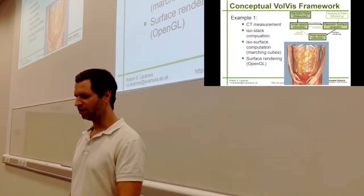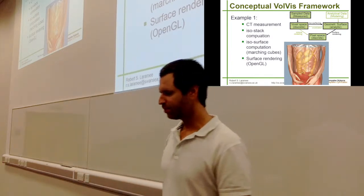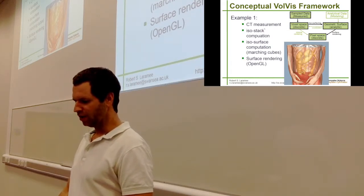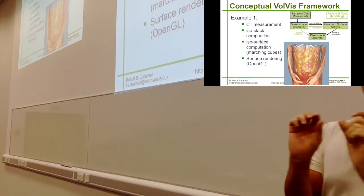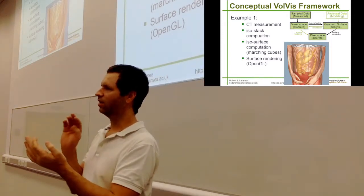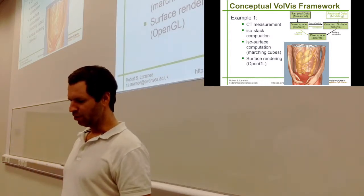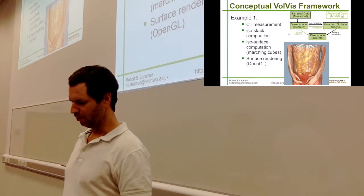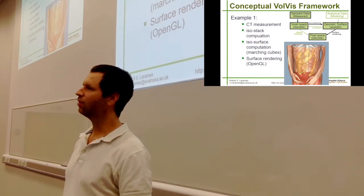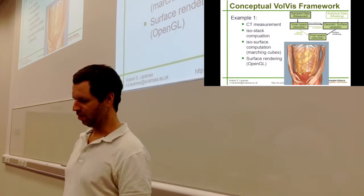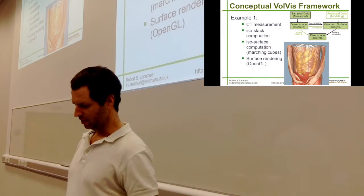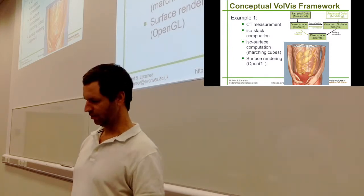We project the triangles to image space. So there's the CT measurement — that's data acquisition. Isostack computation — that's data enhancement. Isostack computation means arranging the samples in a cubic space with evenly spaced samples along all three axes: X, Y, and Z. Then it computes surfaces, which is a special lecture. And then we render the surfaces using OpenGL. These are different surfaces: a skin surface, a surface for the bones, a surface for some soft tissue — looks like intestines. That's one example of the VolVis pipeline.